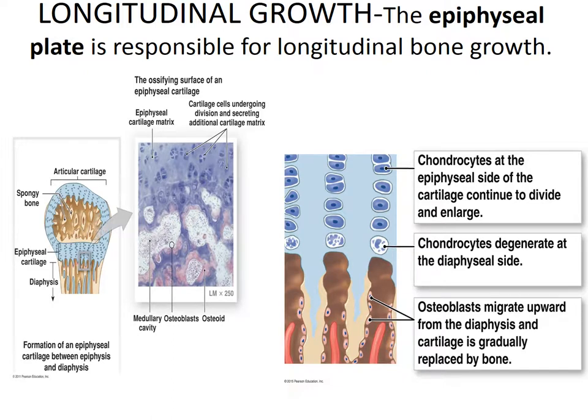In longitudinal growth, hyaline cartilage cells form tall columns at the epiphyseal plate or growth plate and within the articular cartilage, as shown in the diagram. The cells at the top of the stack divide quickly, forming what we call a zone of proliferation, increasing the thickness of the epiphyseal plates and causing the entire long bone to lengthen. Older chondrocytes closer to the shaft enlarge in an area called the zone of maturation and hypertrophy. The matrix surrounding the chondrocytes then becomes calcified, resulting in death of the chondrocytes and deterioration of the cartilage — this zone is called the zone of calcification. Osteoblasts in the medullary cavity then ossify the cartilage spicules, forming spongy bone within the zone of ossification.